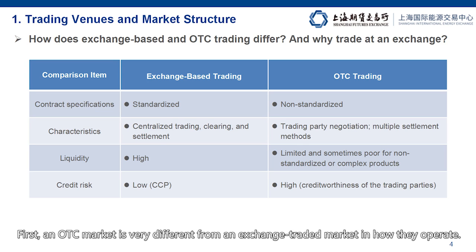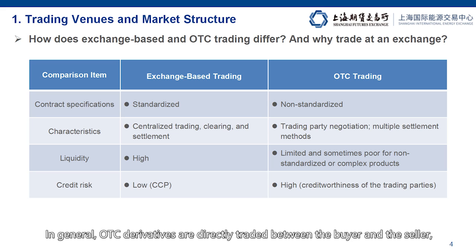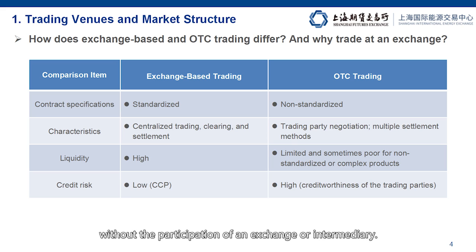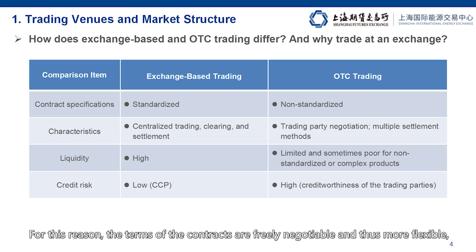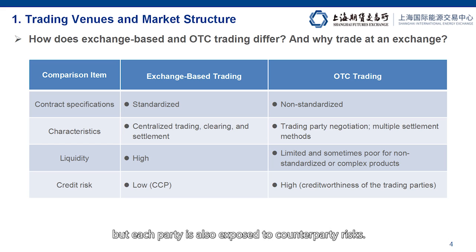First, an OTC market is very different from an exchange-traded market in how they operate. In general, OTC derivatives are directly traded between the buyer and the seller without the participation of an exchange or intermediary. For this reason, the terms of the contracts are freely negotiable and thus more flexible, but each party is also exposed to counterparty risks.